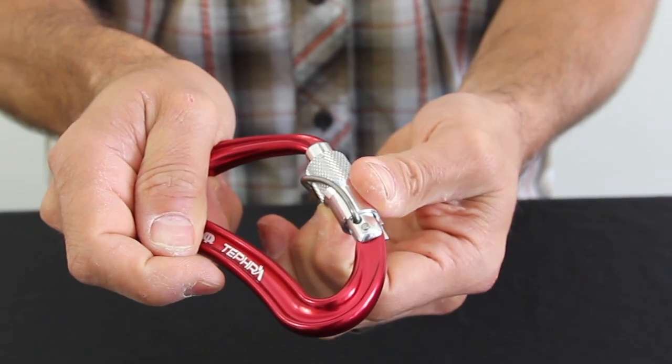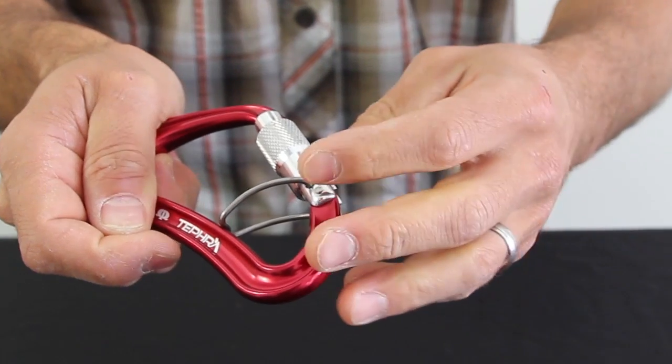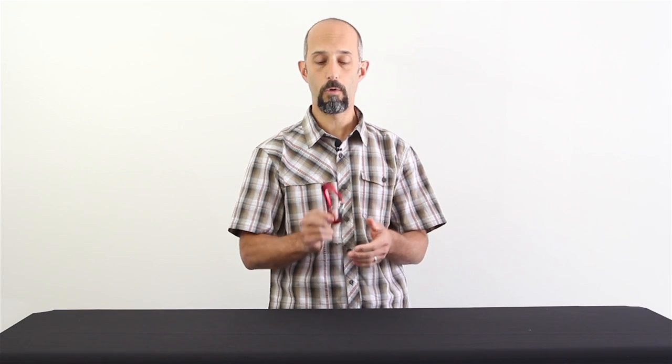What's unique about the Tefra is it has this spring-loaded gate. Many carabiners out there have a pin in them or something to help keep them oriented properly.